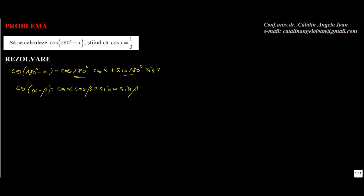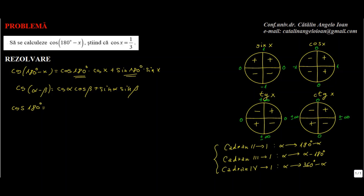Unghiurile acestea de 180 de grade pot fi gândite ca unghiuri în cel de-al doilea cadran. Haideți să vedem cum transformăm aceste unghiuri ca să le aflăm valorile din primul cadran. Avem formule de reducere la primul cadran în care vedem că cosinusul în cel de-al doilea cadran este negativ, deci vine minus cosinus, iar un unghi din cel de-al doilea cadran în primul se scade din 180. Deci obținem cosinus de 180 minus 180.